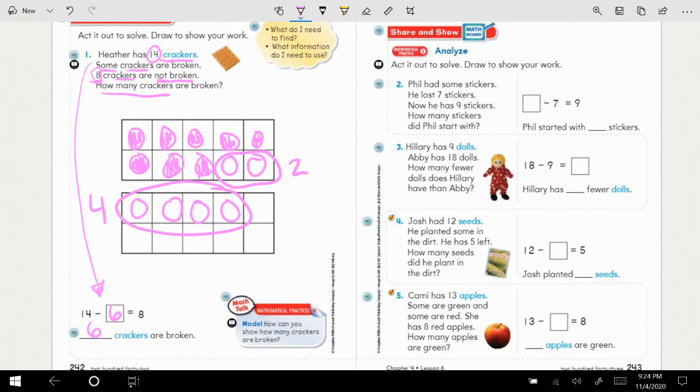So even though it was in the middle of the problem, we were still able to use our eight part to help us. We really ended up thinking about it as 14 minus eight equals six. Because parts can switch, whether we're adding or subtracting, the parts can switch and it does not change the whole.